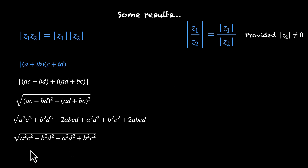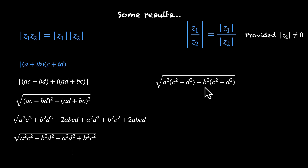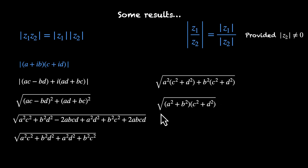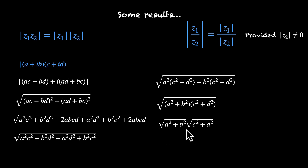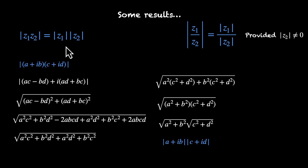Taking a² common gives a²(c² + d²), and taking b² common gives b²(c² + d²). Together, this becomes (a² + b²)(c² + d²) inside the square root. Since both factors are real and positive, we can split the square root: √(a² + b²) · √(c² + d²). This is |z1| times |z2|, which proves |z1·z2| = |z1|·|z2|.